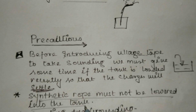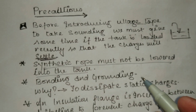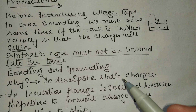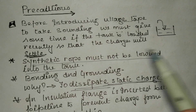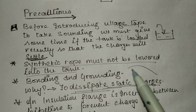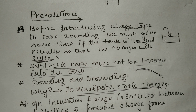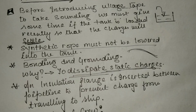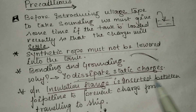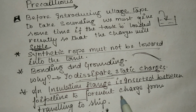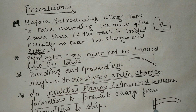The third precaution is bonding and grounding. This is necessary to dissipate the static charges which are formed. Bonding and grounding of flanges and other elements is required. An insulation flange is inserted between the pipeline connecting the shore and the ship, to prevent the movement of charge from shore to ship.